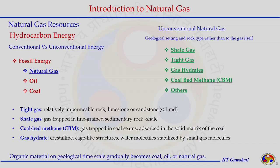Tight gas is trapped in relatively impermeable rock like limestone or sandstone with permeability less than 1 millidarcy. Similarly, shale gas is trapped in fine-grained sedimentary rock with a shale structure, and certain fractures need to be created to extract the natural gas from these sources.